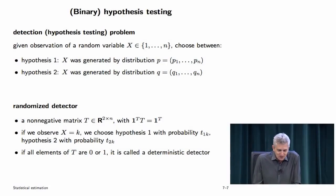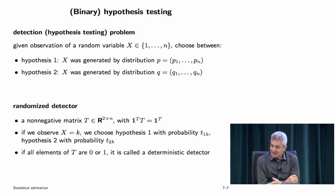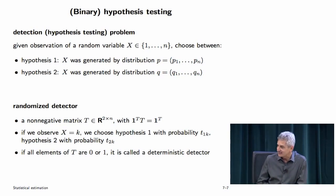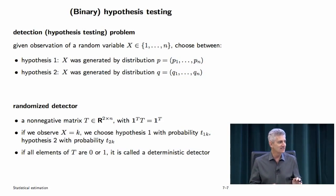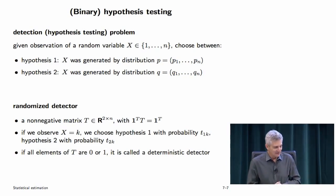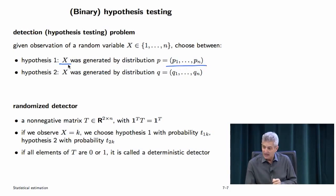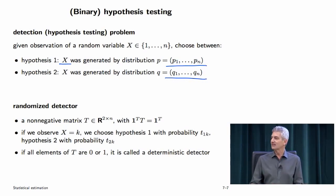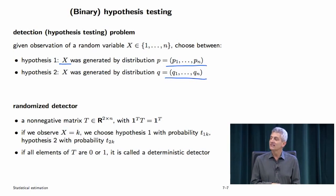We'll move to hypothesis testing — these are all related. MLE with a continuous parameter is something like hypothesis testing; you're testing one value of x versus another. In its most basic form: you have two hypotheses, a variable generated from either one distribution or another, with N possible values. You see a sample and want to say something intelligent about which distribution it came from. That's the most basic setup.